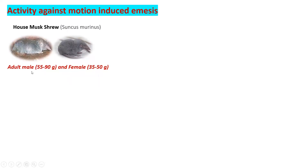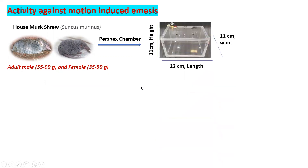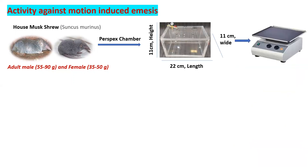For this experiment, one should use the house musk shrew. If using adult male animals, the weight should be 55 to 90 grams, and for females, the weight should be 35 to 50 grams. These animals are kept in a perspex box with dimensions of 11 cm height, 22 cm length, and 11 cm width.